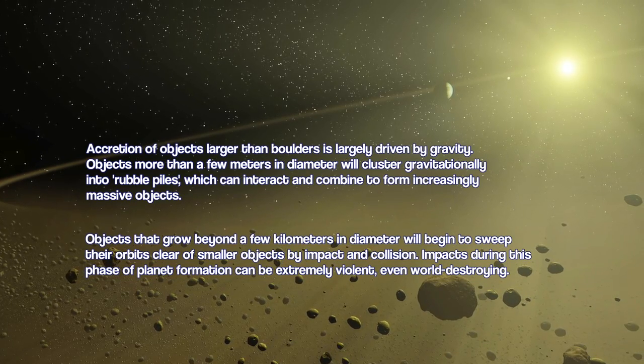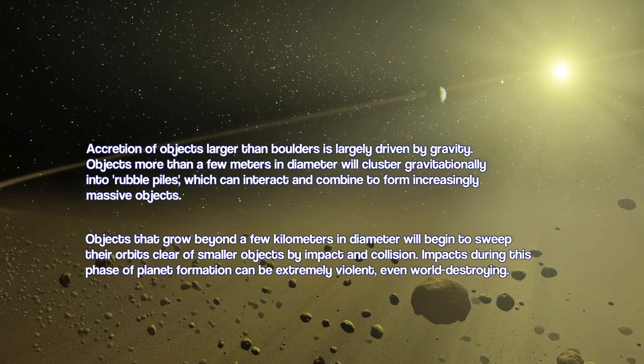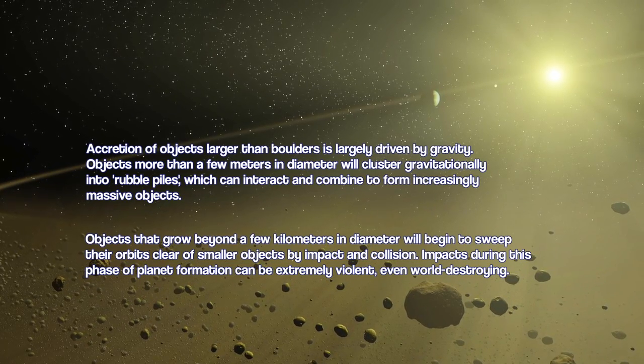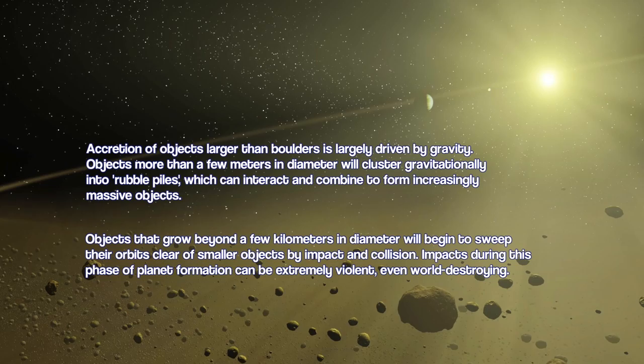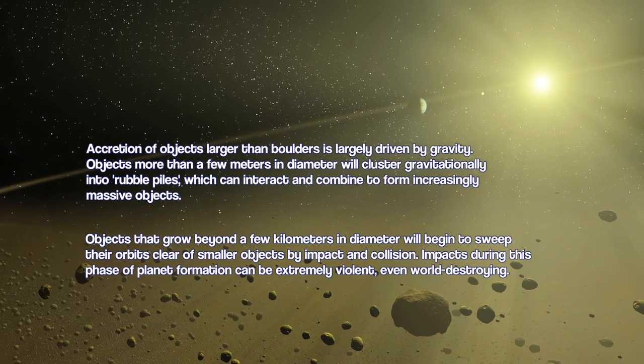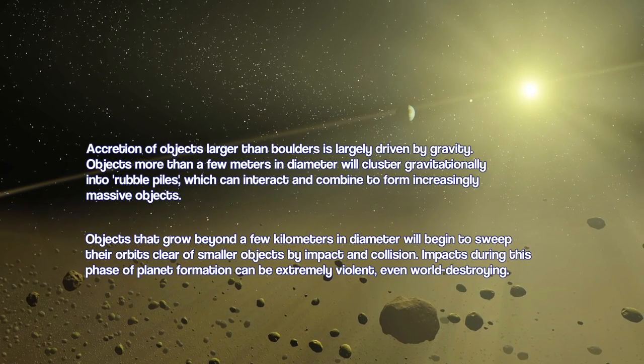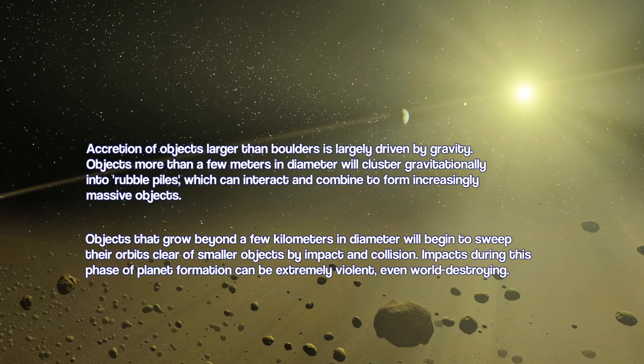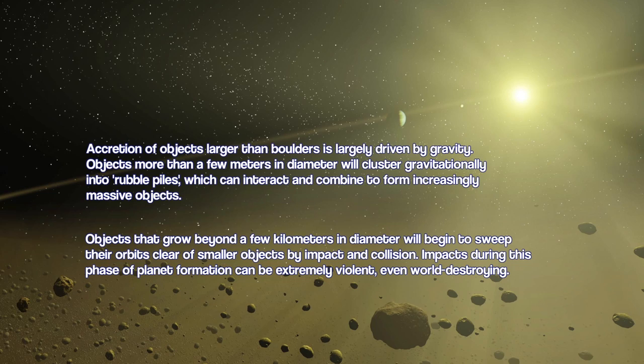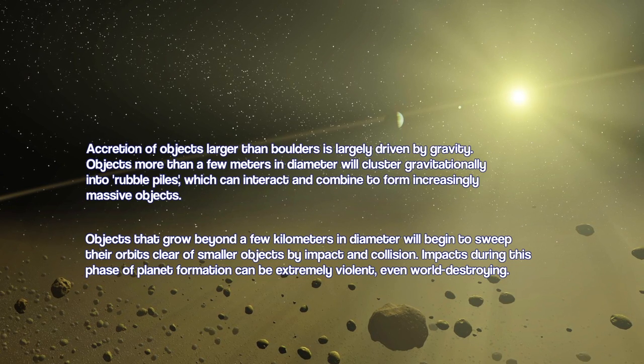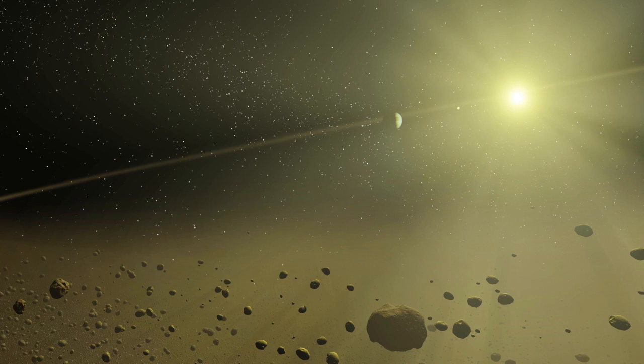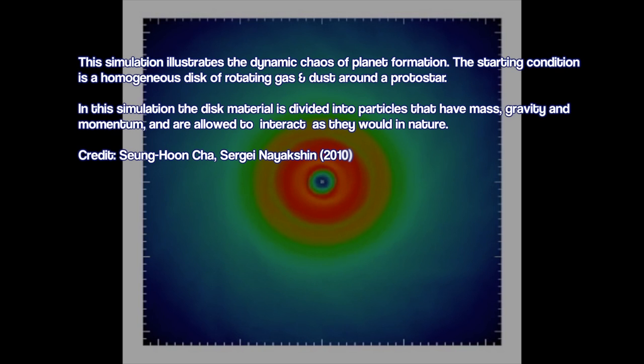So as these rubble piles begin to grow, they grow into larger and more massive objects. The most successful, if you want to call it that, of these objects begin to dominate their orbital pathway and become the primary attractors of the remaining unbound material. Once an object gets to be larger than a few kilometers in diameter, the process goes pretty fast. It begins to sweep up material pretty readily in its surrounding orbital region from the star and grow within a period of just a few dozen million years into a fully sized planet.